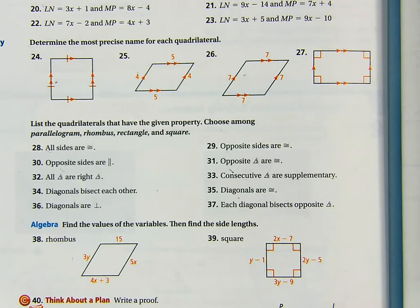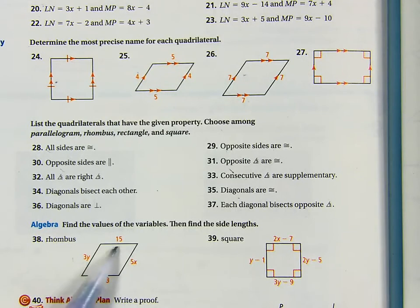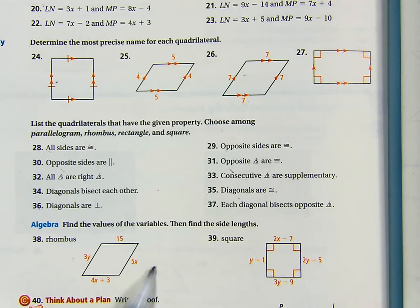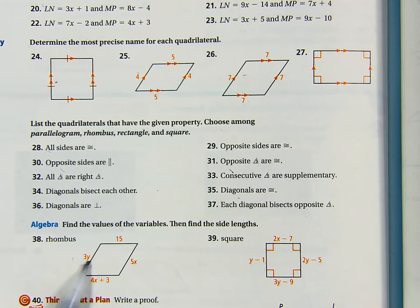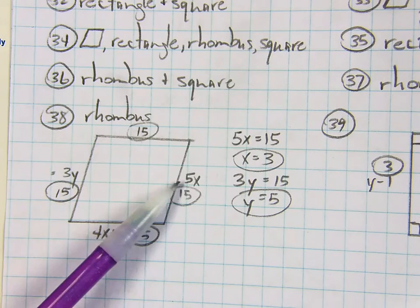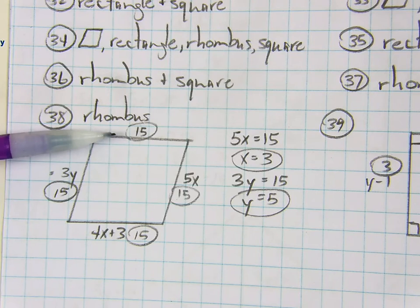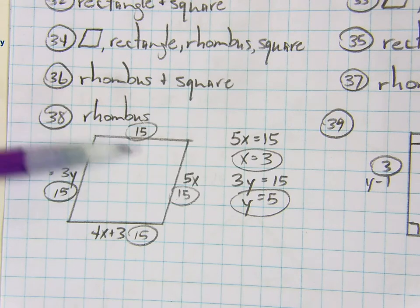Number 38: they want the values of the variables and then the side lengths. Since it's a rhombus, all sides are equal to 15. The easiest way: 5X equals 15 gives X equals 3, and 3Y equals 15 gives Y equals 5. You could also set 4X plus 3 equal to 15 and still get X equals 3 — but 5X equals 15 is simpler.